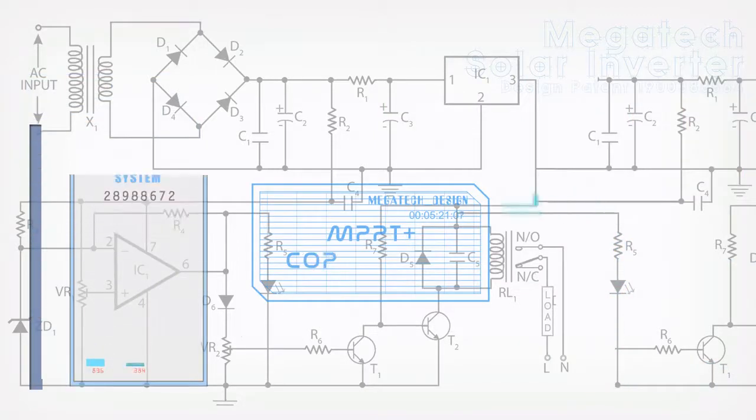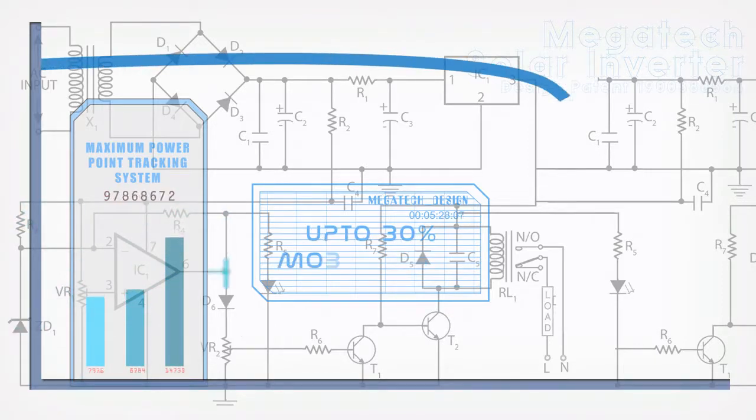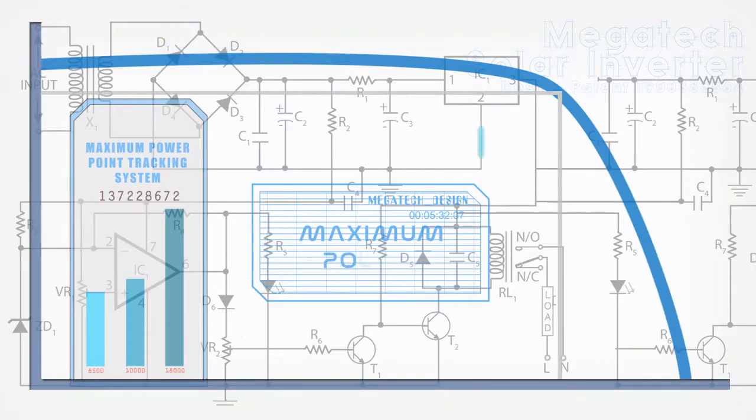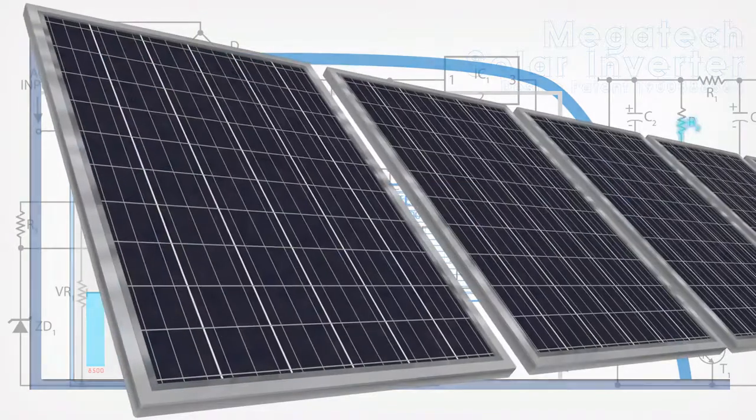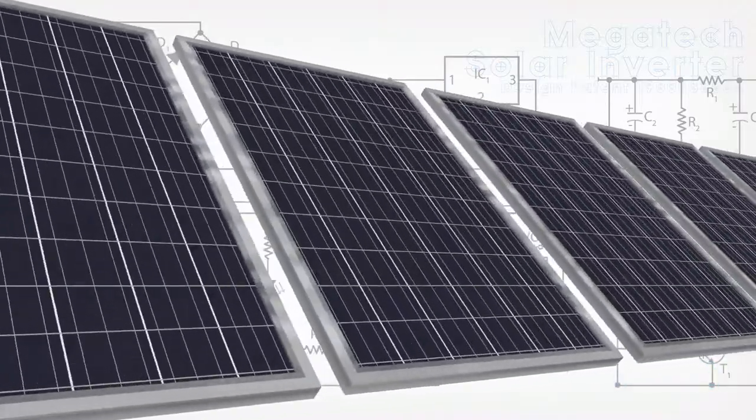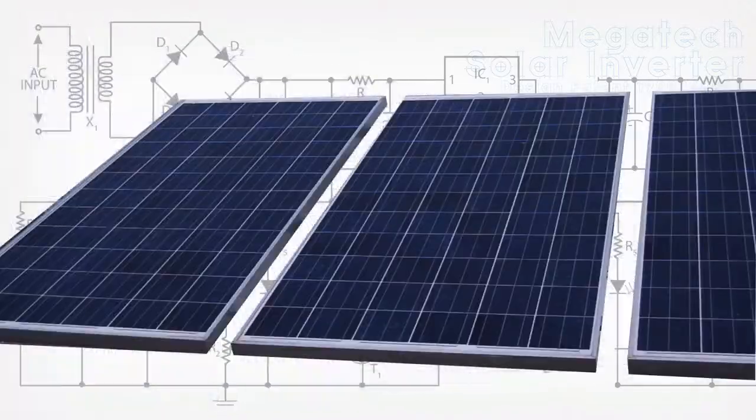The MPPT Plus Solar Charge Controller uses an advanced algorithm that ensures more solar power generation, giving you up to 30% more solar power. You can also choose from many kinds of solar panels in terms of size, cost, and power capacity. Now, that's a flexibility that only the Megatech Solar Ready UPS offers.